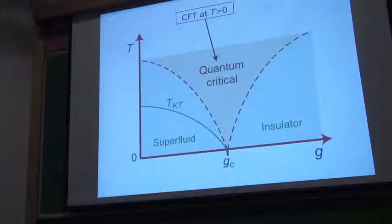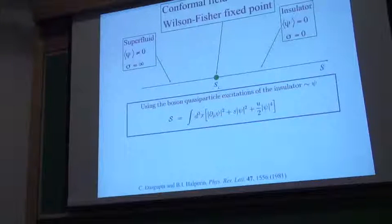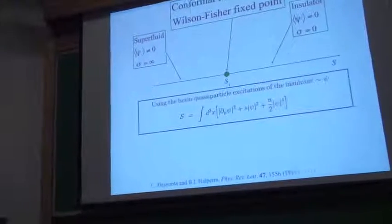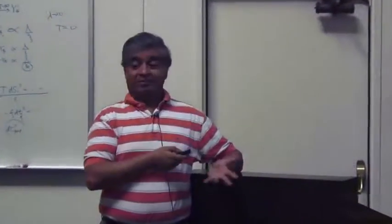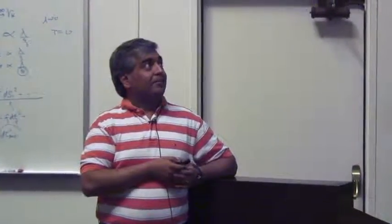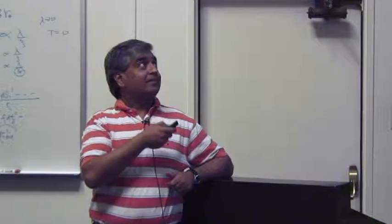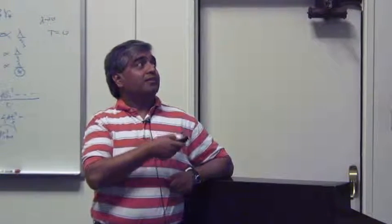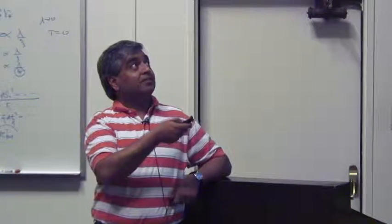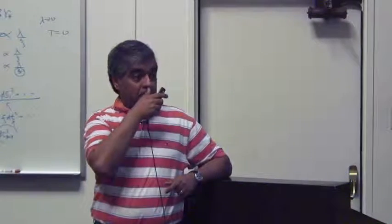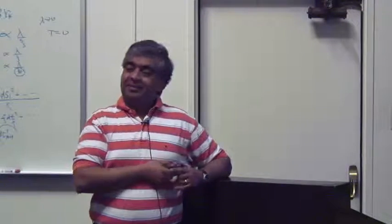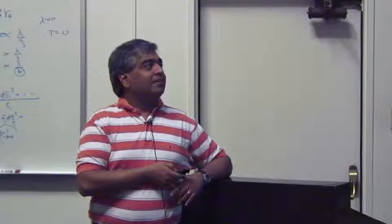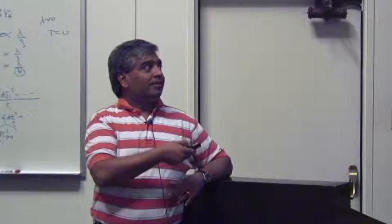Now, as I mentioned yesterday, in different contexts we want to think about the CFTs here. Before I get there, I want to do one sneaky reason for introducing this: to make some points about duality and gauge theories. This looks like a very reasonable description — you have an order parameter, in this case the superfluid condensate psi, and that has a relativistic field theory describing a transition from an insulator to a superfluid. This particular theory is actually known to have a dual representation.